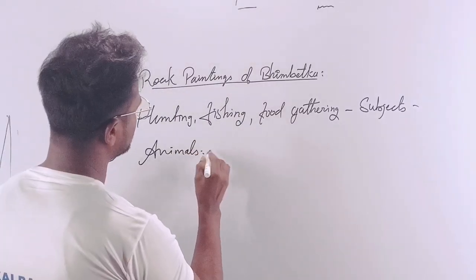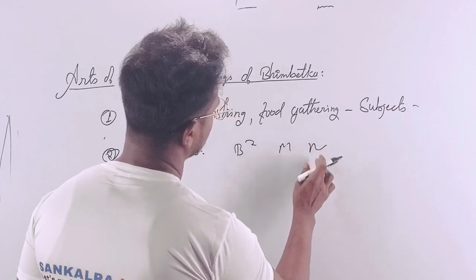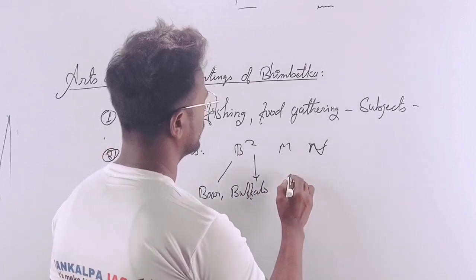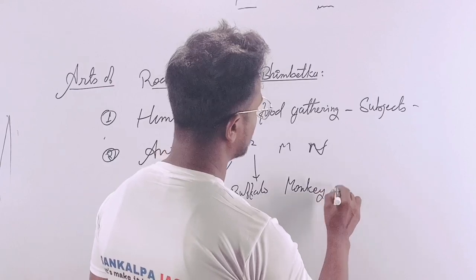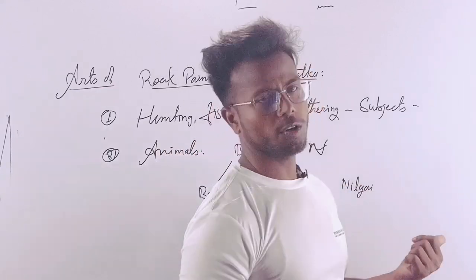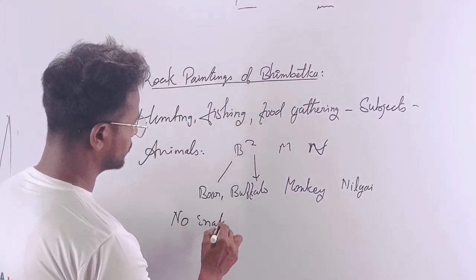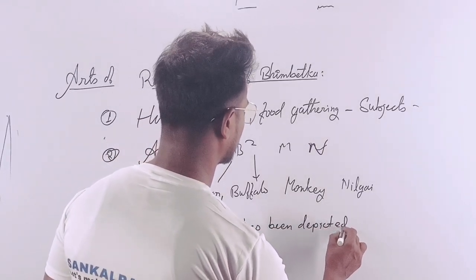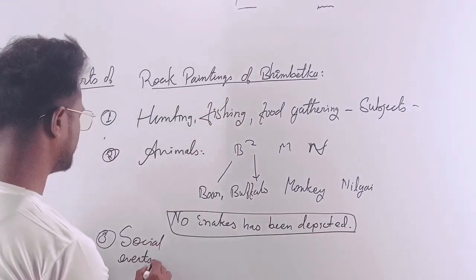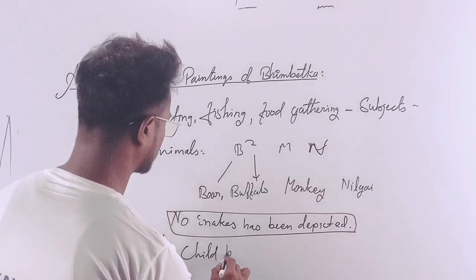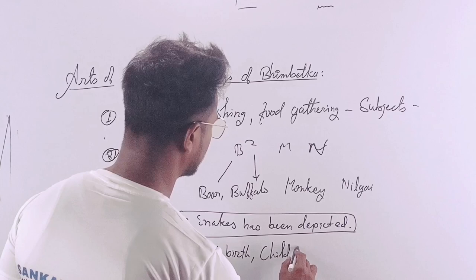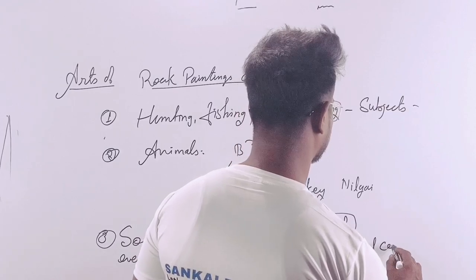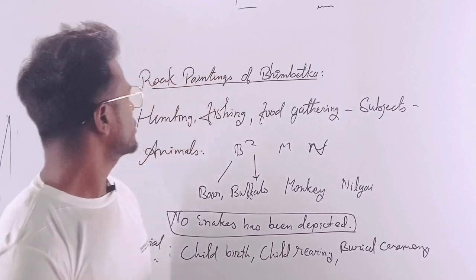Animals depicted in the Bhimbetka paintings include boar, buffalo, monkey, and nilgai. No snakes have been depicted. Some social events were also depicted, such as childbirth, child rearing, and burial ceremonies.